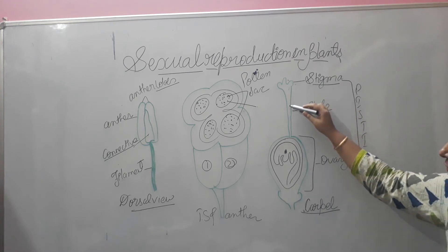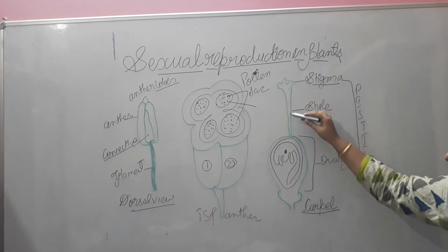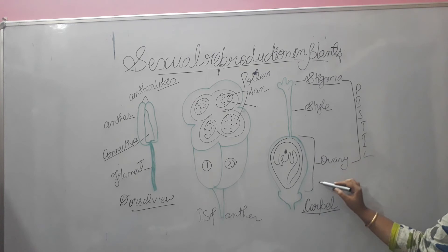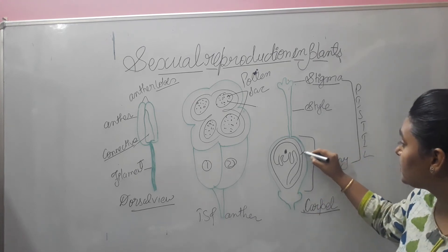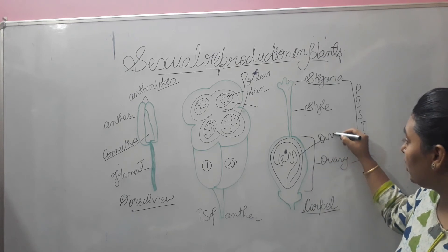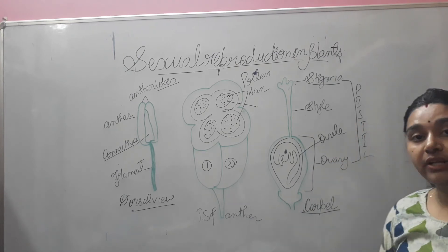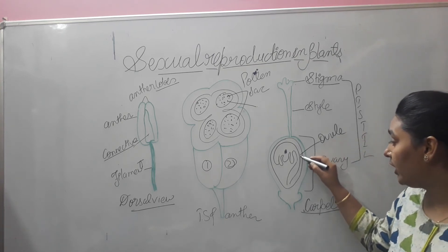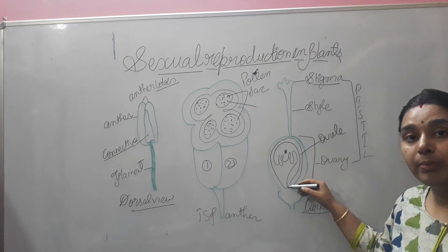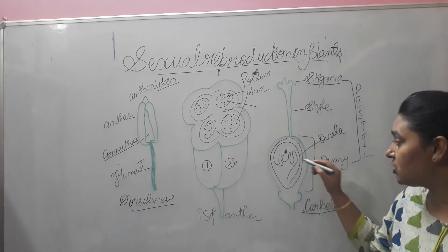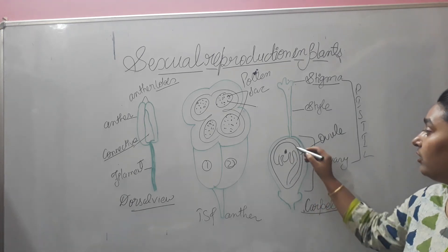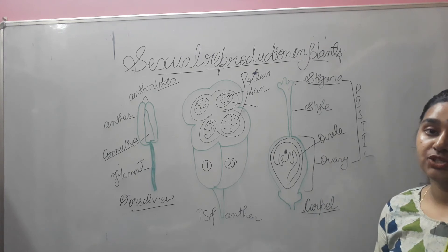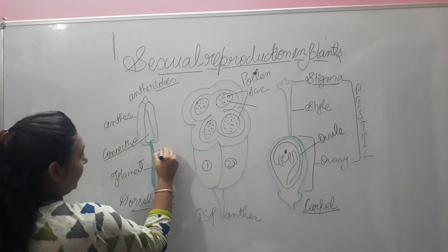This pollen will come over here and release the male gamete from inside. That male gamete is going to come through the style to the ovary. Inside the ovary, this part is the ovule. Many ovules are there. The male gamete will come inside the ovule through the micropyle end and here it will do the fertilization where the haploid